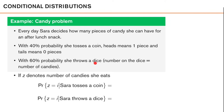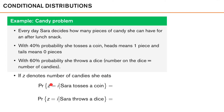Now, if we let z denote the number of candies that she eats, what is the conditional probability that she eats i candies given that Sarah tosses a coin, or that she throws a dice? Well, let's look at the conditional probability when we condition on Sarah tossing a coin — so we have no uncertainty regarding which method she uses. If we know she tosses a coin, we know that with 50% probability she gets one piece of candy and with 50% probability she gets zero pieces. We can describe this conditional probability like this: 0.5 probability for one or zero candies, and 0% probability for any other number of candies.